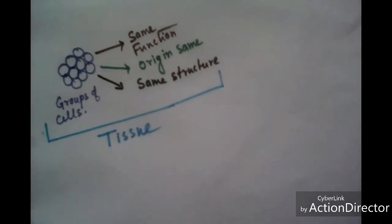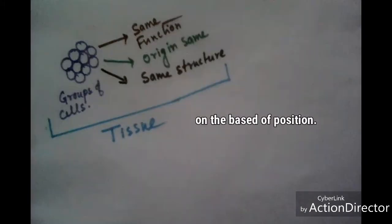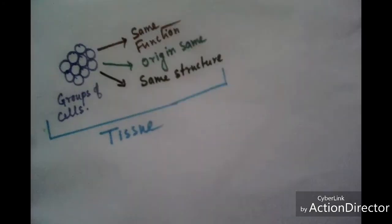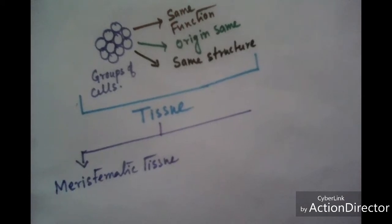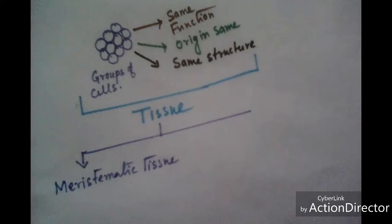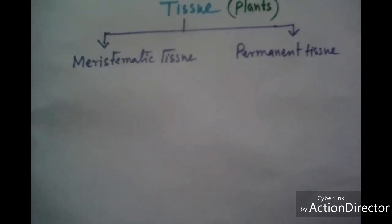In plants, two types of tissues are present: one is meristematic tissue and another type is permanent tissue. Meristematic tissue is always present at the growing point of a plant, and meristematic cells never stop dividing.